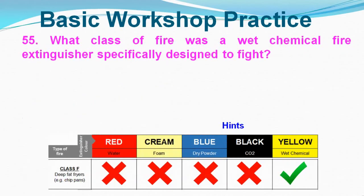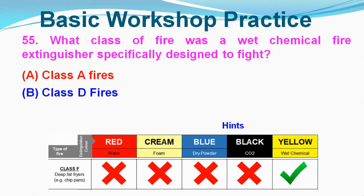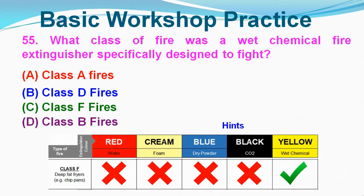Question No. 55: What class of fire was a wet chemical fire extinguisher specially designed to fight? Option A: Class A Fire, Option B: Class D Fire, Option C: Class A Fire, Option D: Class B Fire. Correct answer is Option C, Class A Fire.